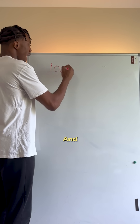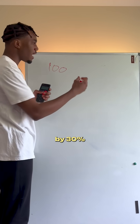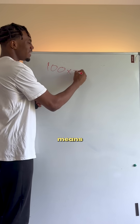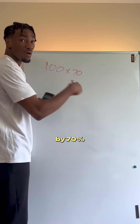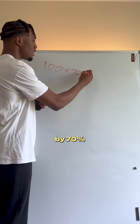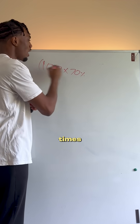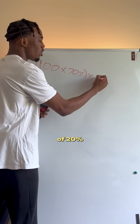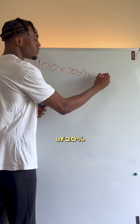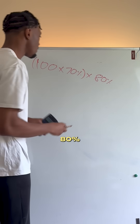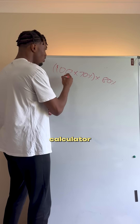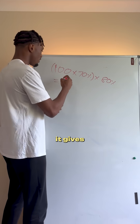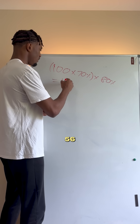Let's say the item is $100. We're discounting it by 30%, meaning we multiply it by 0.70, and then we apply the further 20% reduction by multiplying by 0.80. Put that in the calculator and it gives us 56.